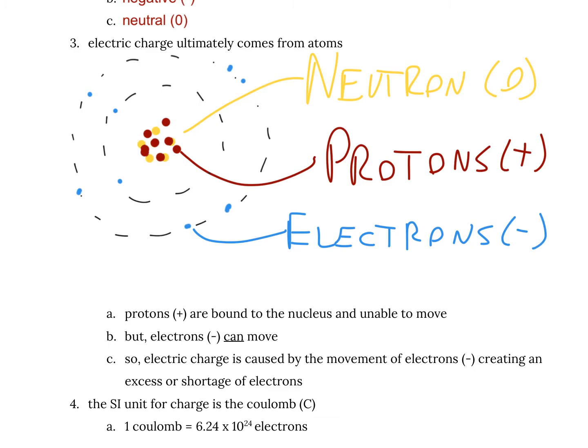Why is all this important? Your protons are bound to the nucleus — they're unable to move. The positive charges of matter are not able to move. But your electrons can move, and that means it's your electrons that create electric charge. Electric charge is caused by the movement of electrons.